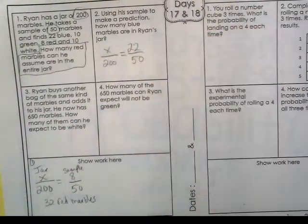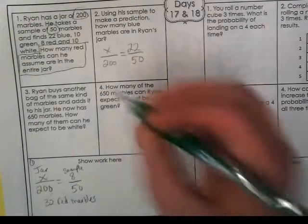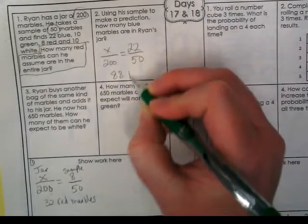So again, a few different ways to do this. I can do 22 times 4 in my head because 2 times 4 is 8. So 22 times 4 would be 88. So 88 blues.